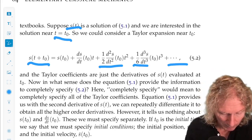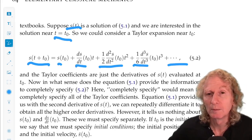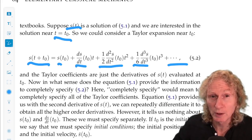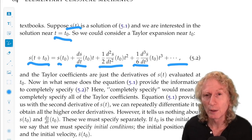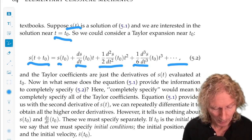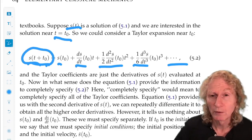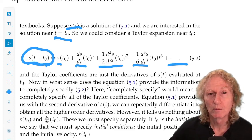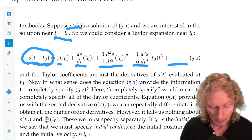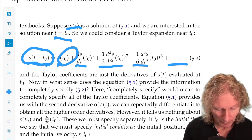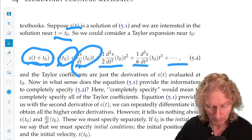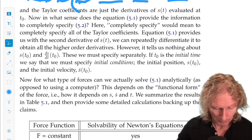But we're stuck with the initial s of t naught, initial condition, and the initial velocity. Those have to be specified. If they are, then we have a unique solution. Unique means that one solution that satisfies the given initial conditions, initial position, initial velocity.